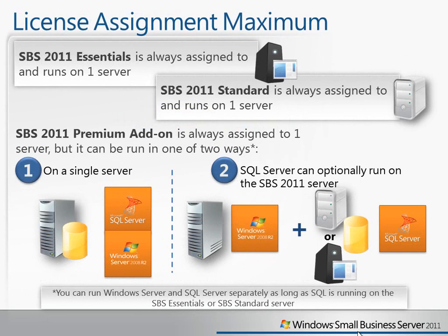For the Premium add-on license assignment, for SBS Essentials and Standard it's simple — you assign the license to a server and run the software on that server. But for the Premium add-on, you have a bit more flexibility. You can run it on a single server, or optionally across two different servers. The Premium add-on includes Windows Server 2008 R2 Standard Technologies and SQL Server 2008 R2 Standard for Small Business. You can run both components on a single server, or run the SQL component on either the SBS Essentials or SBS Standard server.